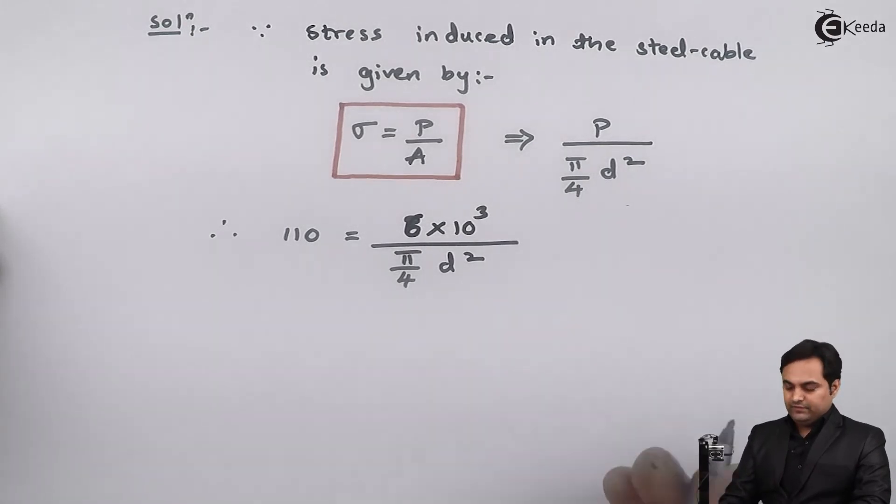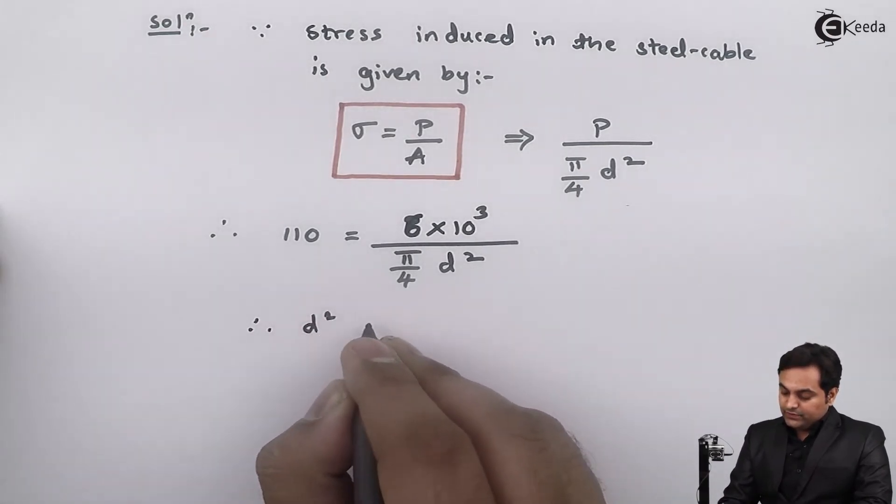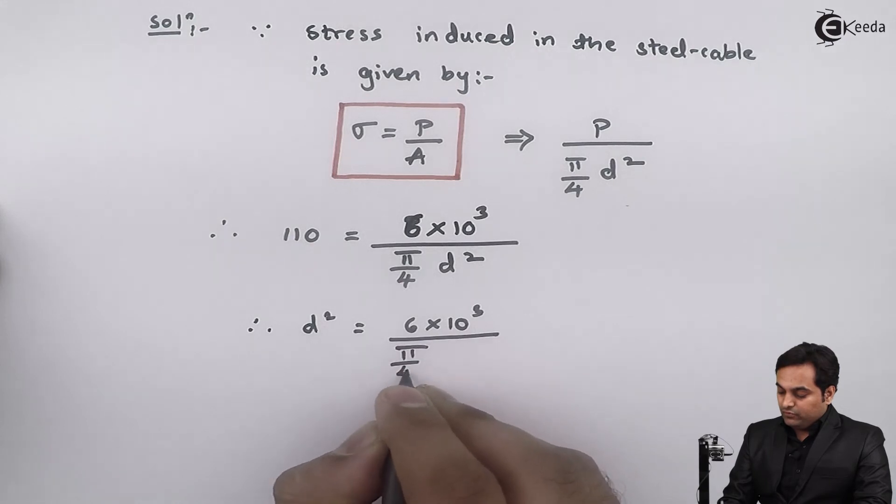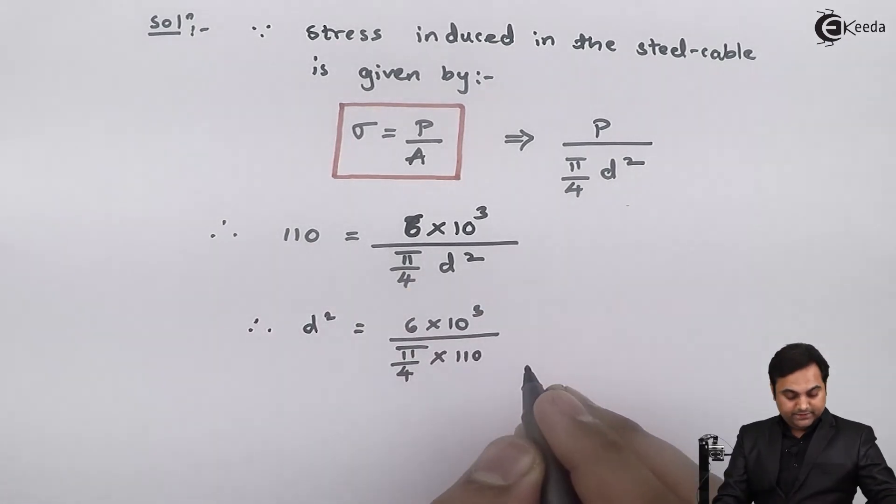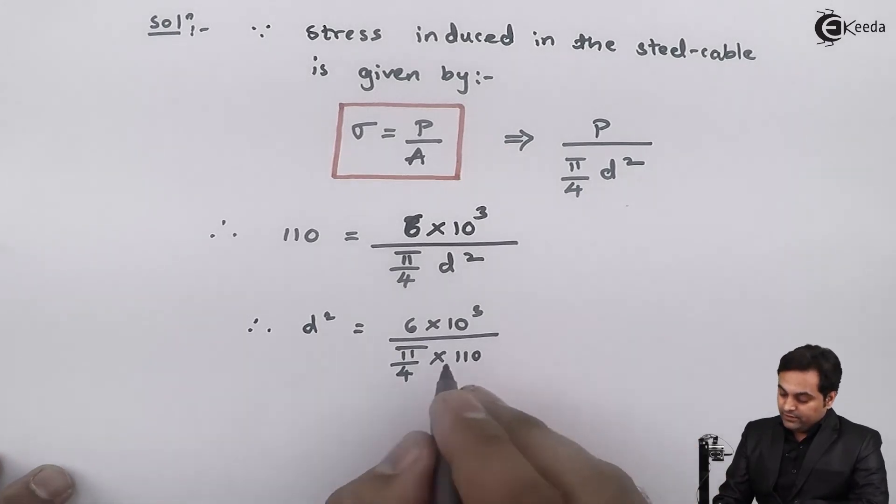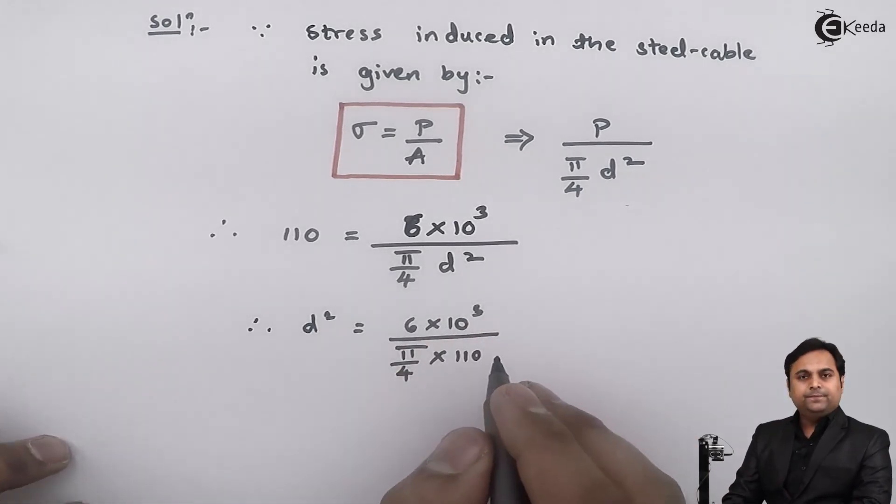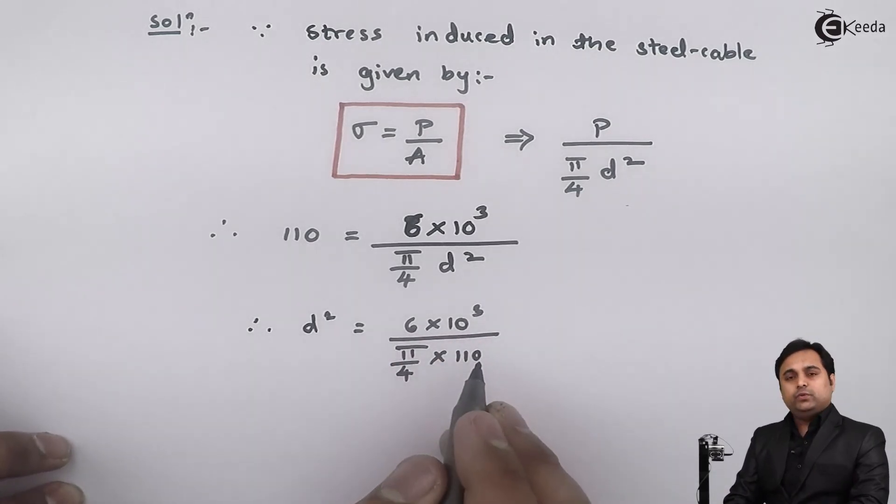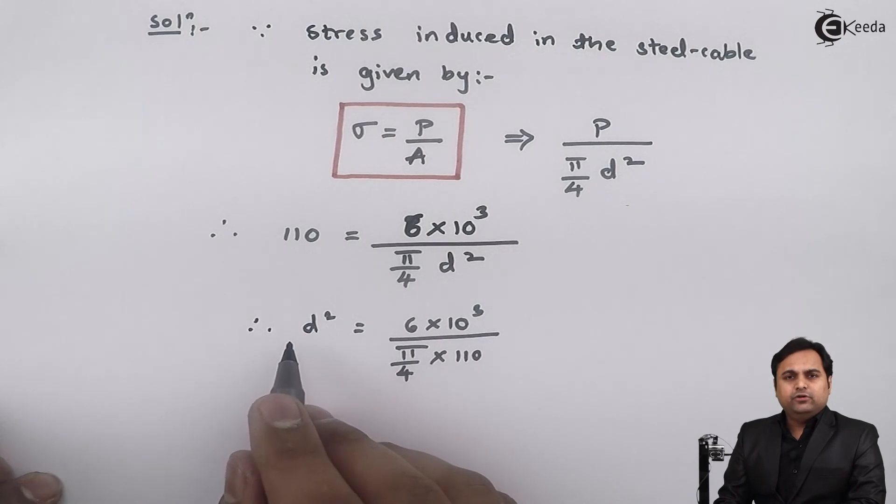Since here we have to calculate this diameter, I'll shift d squared on one side. So here I'll get d squared is equal to 6 times 10 to the power 3 upon pi by 4, with 110 in the denominator. And here if I get this answer and then after getting this answer when I am taking the square root of this, I'll get the value of d.